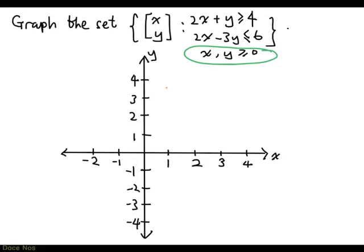x greater than or equal to 0 means all the points with x value greater than 0, and so these are all the points that are on the right of the y-axis. So that's x greater than or equal to 0.